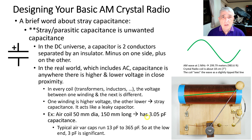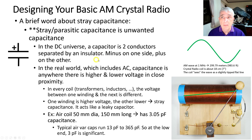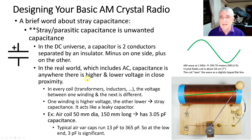Let's talk more about stray capacitance. It is unwanted capacitance — not a discrete capacitor, it's just happening because coils have stray capacitance. In the DC world, a capacitor is two conductors separated by an insulator — you have an air gap and two conductors, charge builds up on one side, minus on one side and plus on the other. But in the real world, which includes AC, capacitance exists anywhere there is higher and lower voltage in close proximity.